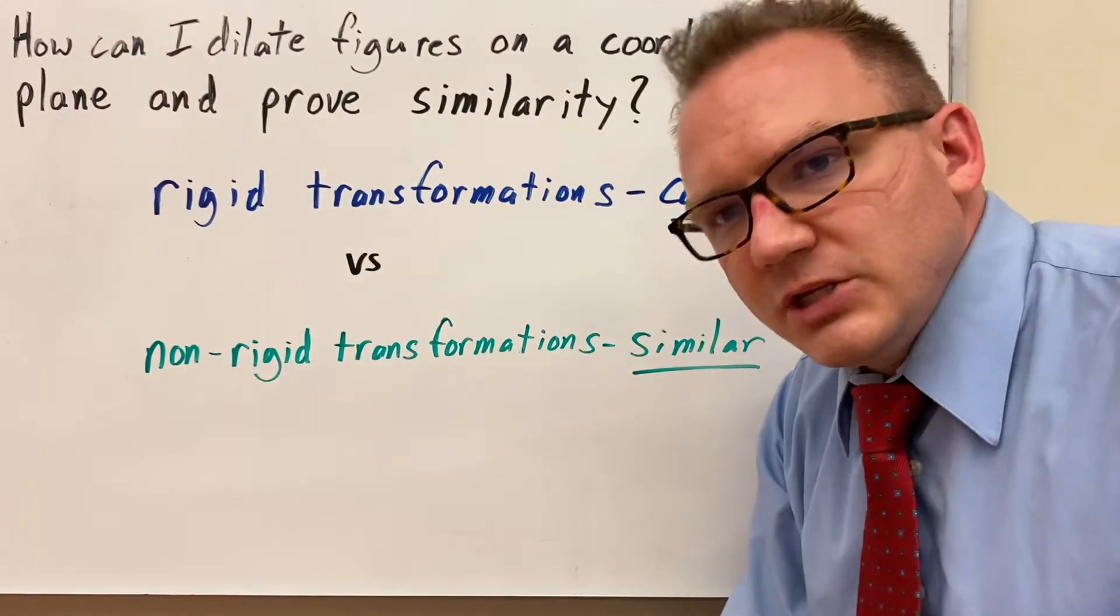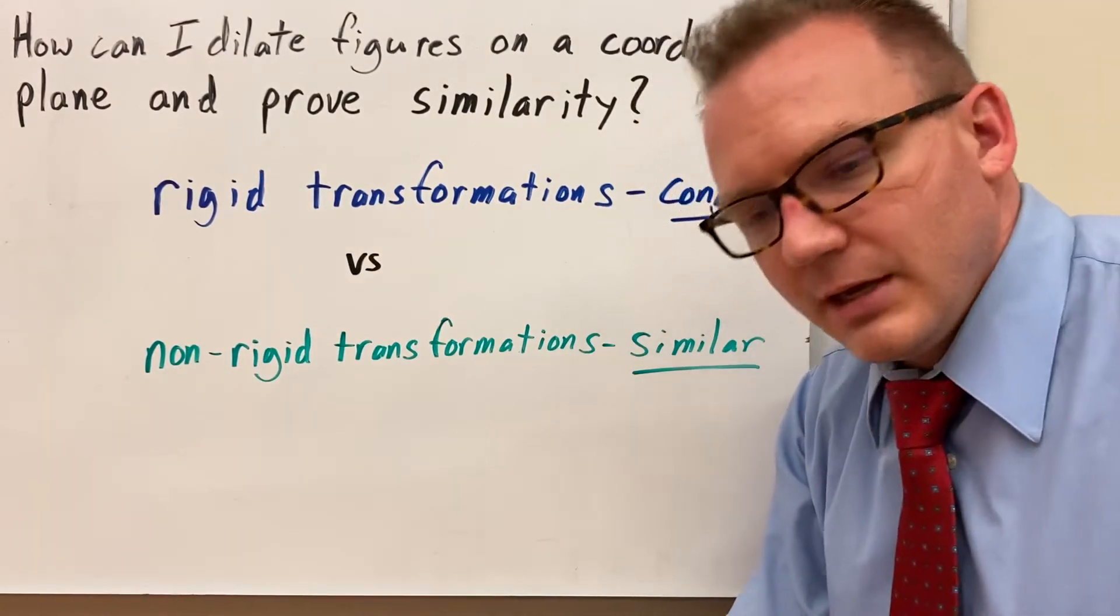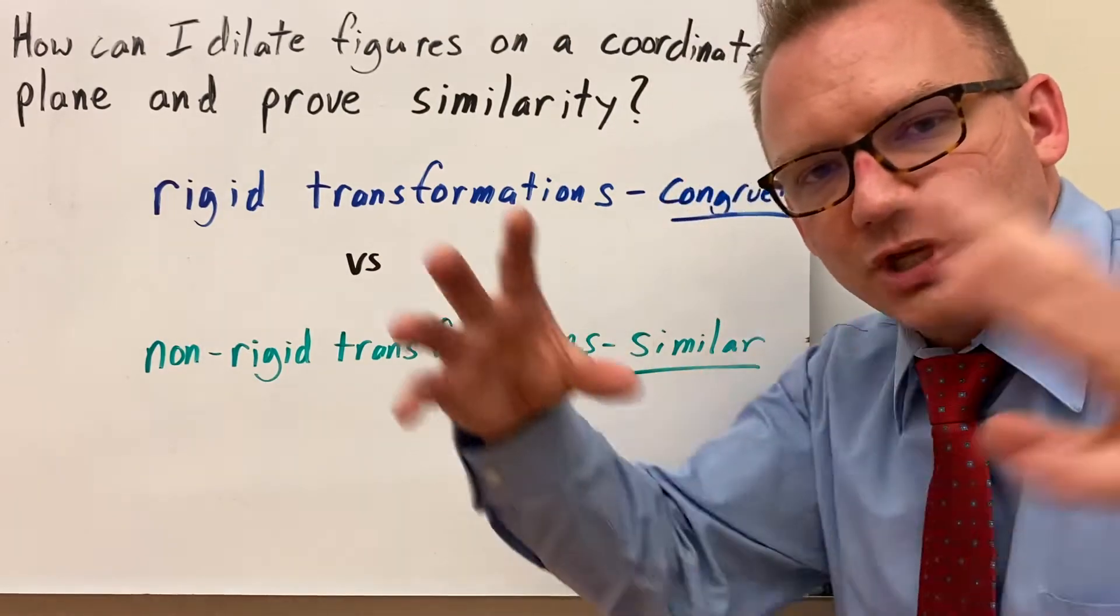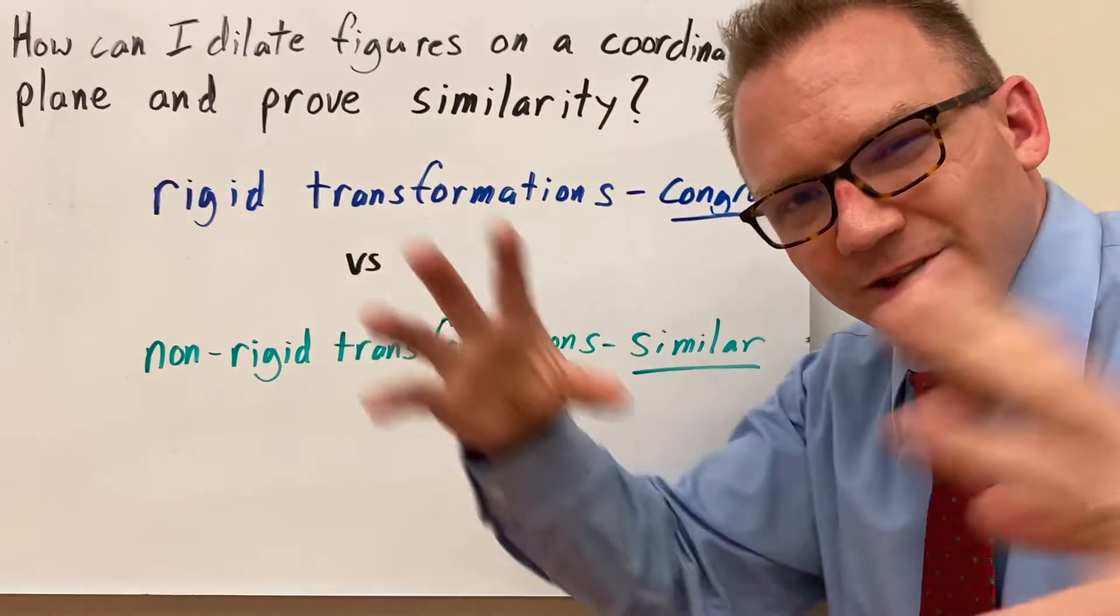That means that the ratio of your sides are the same, your angles are the same, but the size of the shape is either enlarged or shrunk.